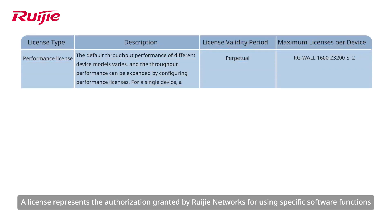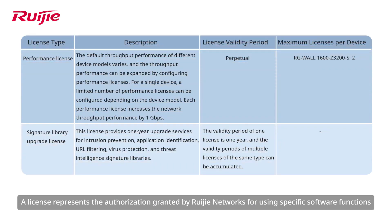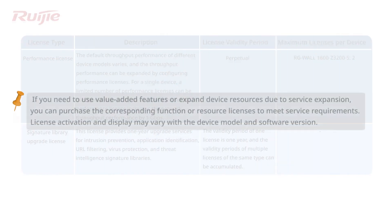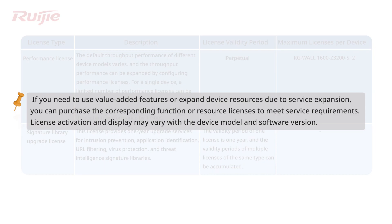A license represents the authorization granted by RUIGIA Networks for using specific software functions. After purchasing a device, you can use basic functions of the device. If you need to use value-added features or expand device resources due to service expansion, you can purchase the corresponding function or resource licenses to meet service requirements. License activation and display may vary with the device model and software version.